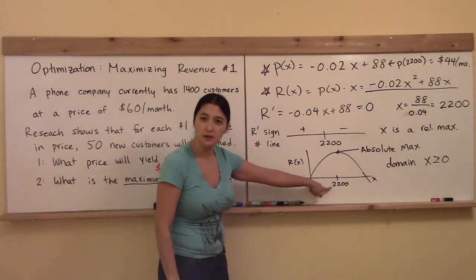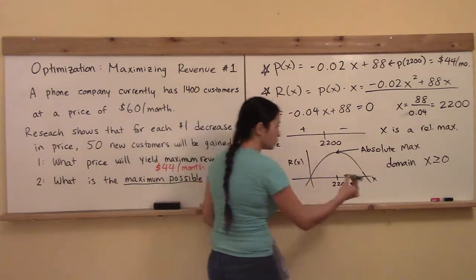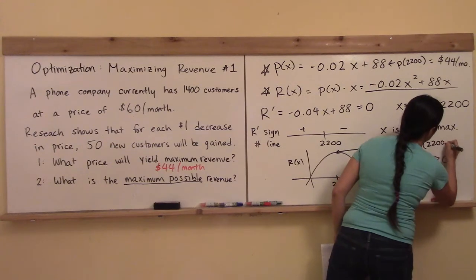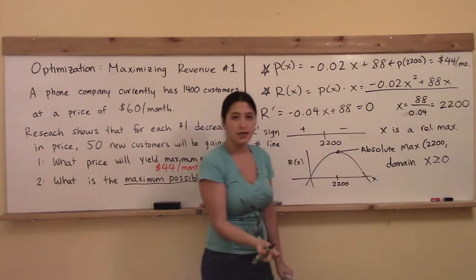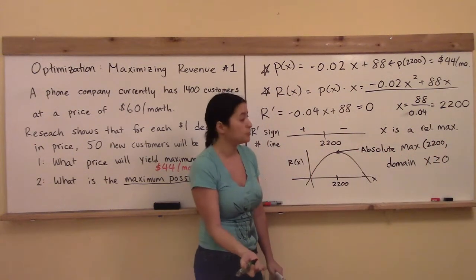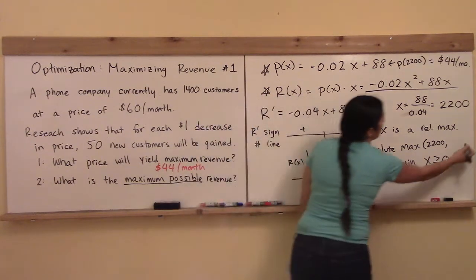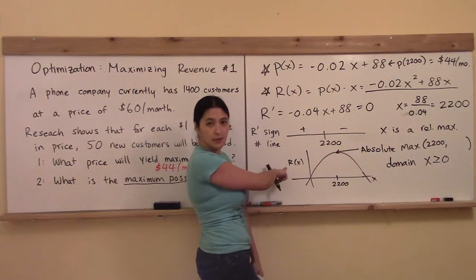I have the x value, and it looks like this is an xy point. The absolute max is located at 2,200, comma what? How am I going to get the y value for that xy point? Well, I have to remember what function I'm plotting, R(x).